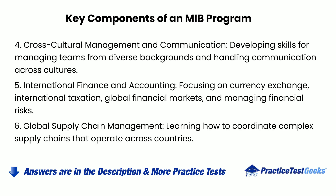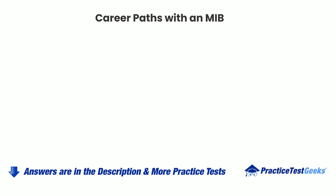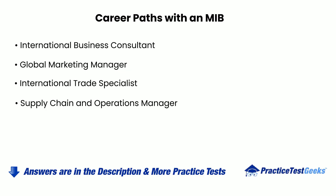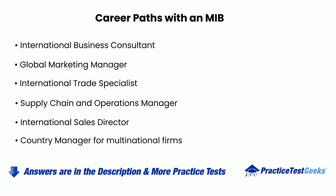4. Cross-cultural management and communication — developing skills for managing teams from diverse backgrounds and handling communication across cultures. 5. International finance and accounting — focusing on currency exchange, international taxation, global financial markets, and managing financial risks. 6. Global supply chain management — learning how to coordinate complex supply chains that operate across countries. Career paths with an MIB include: international business consultant, global marketing manager, international trade specialist, supply chain and operations manager, international sales director, and country manager for multinational firms.